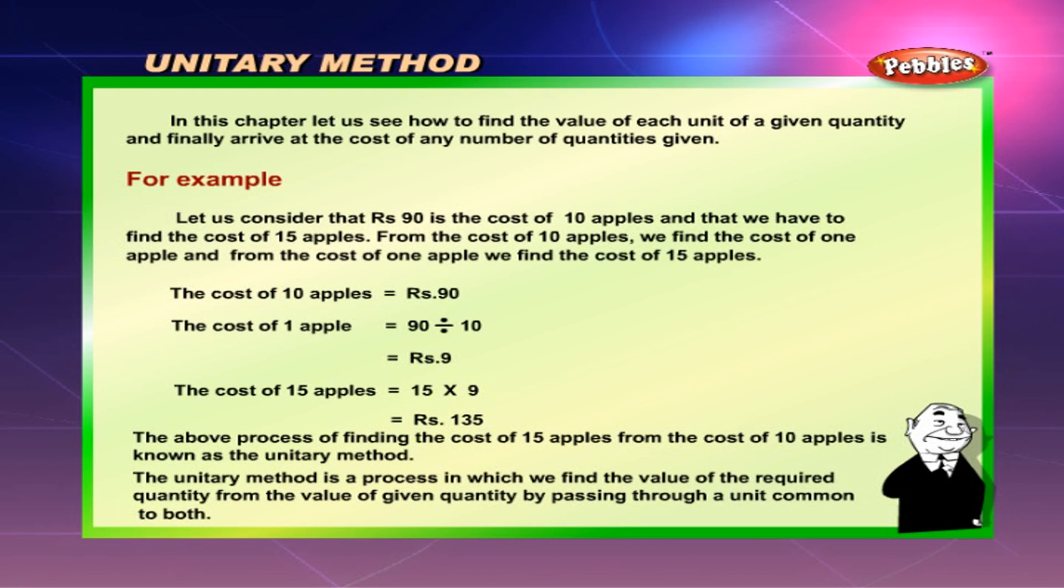The above process of finding the cost of 15 apples from the cost of 10 apples is known as the Unitary method. The Unitary method is a process in which we find the value of the required quantity from the value of a given quantity by passing through a unit common to both.